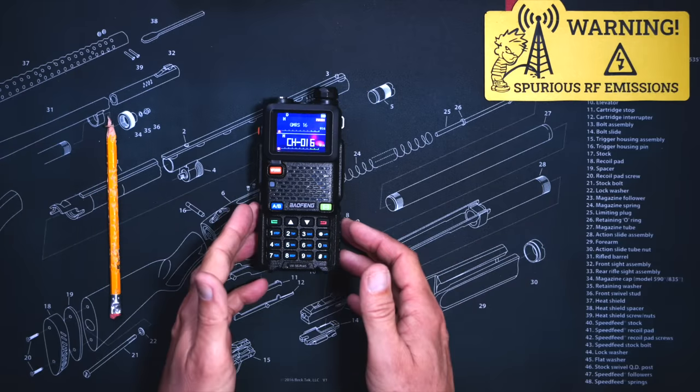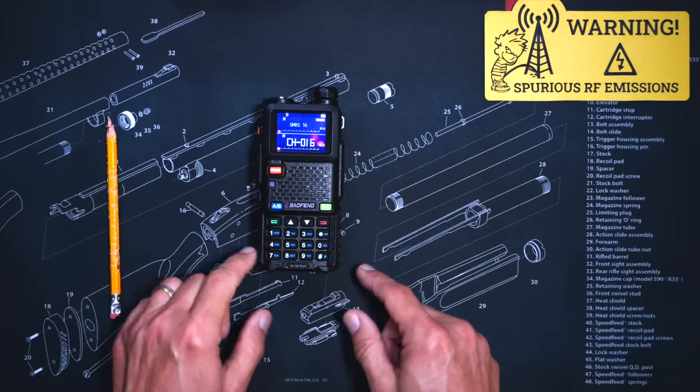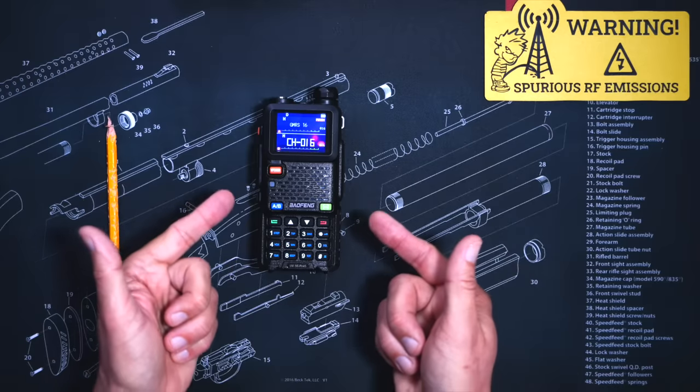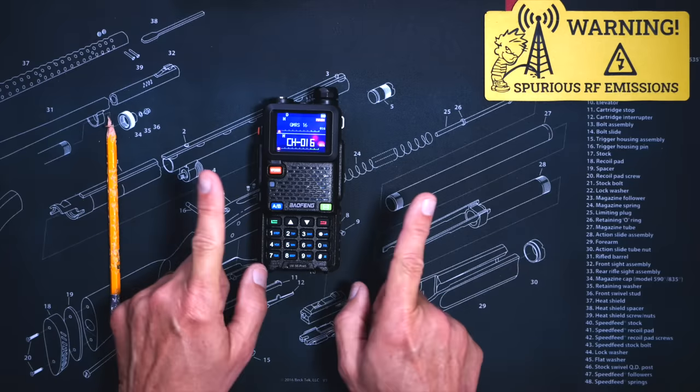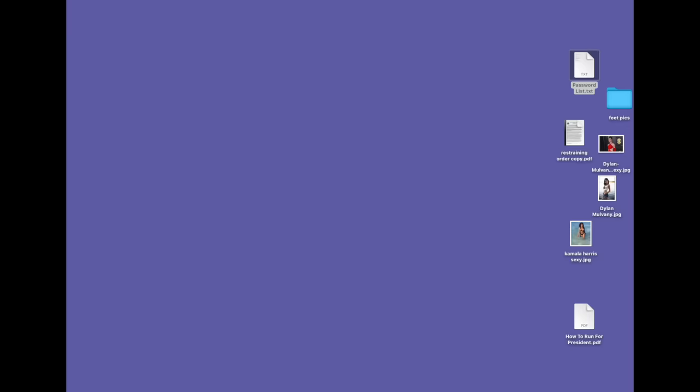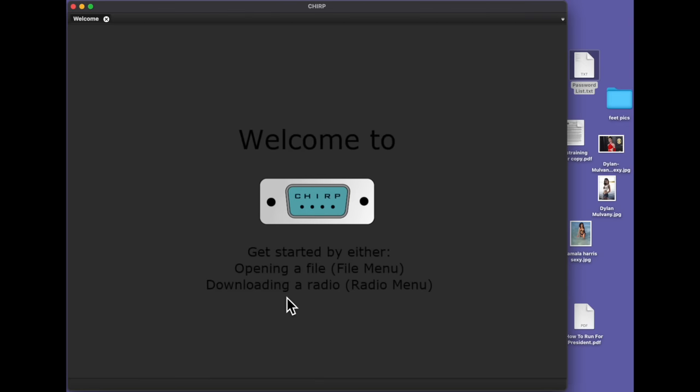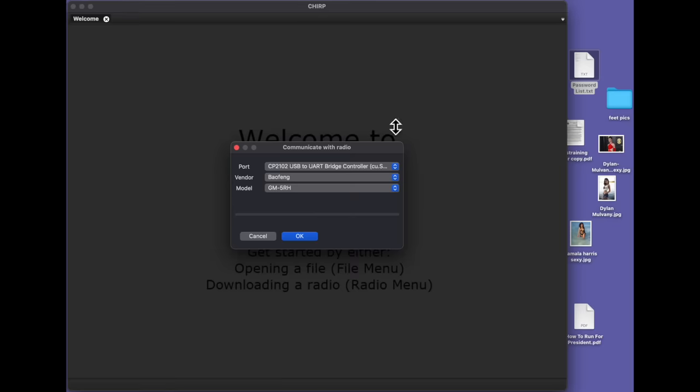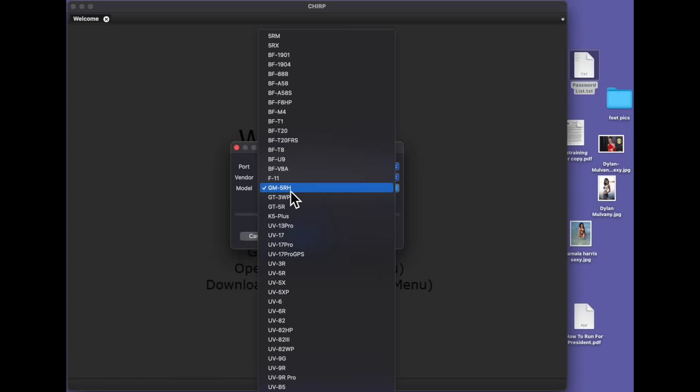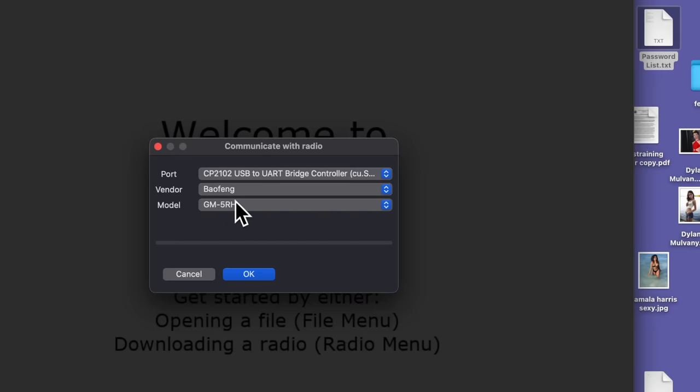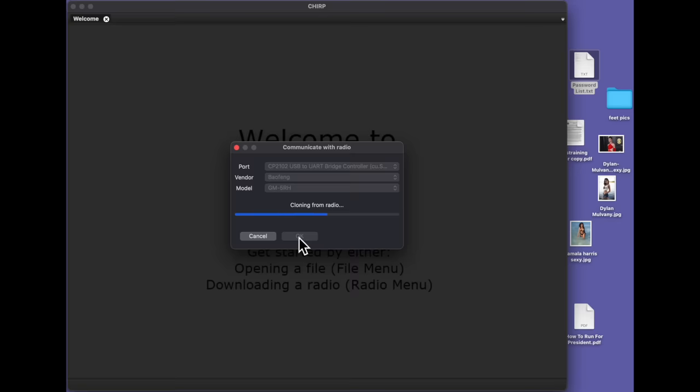When I first reviewed the Baofeng Corporation UV5G Plus radio a few months ago, the radio was not chirp compatible. But oh, how the turntables. Because now you can use chirp to program your Baofeng Corporation UV5G Plus radio. However, to use chirp, you must lie to your computer and select the Baofeng GM5RH model from the list.